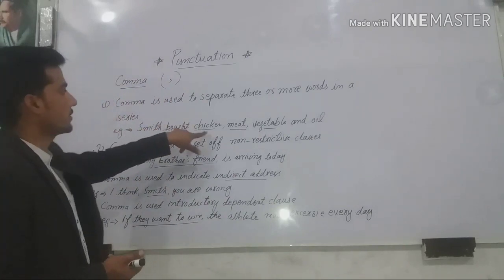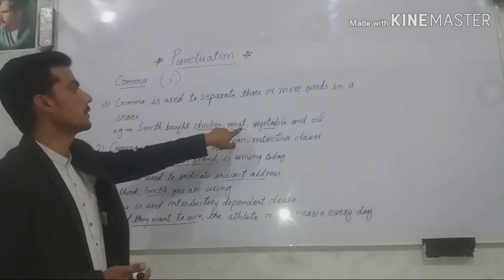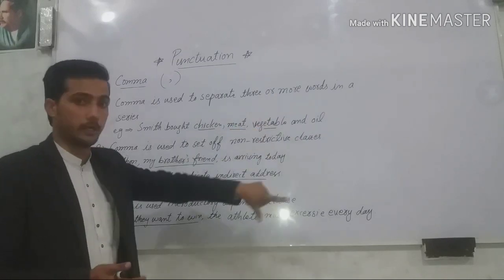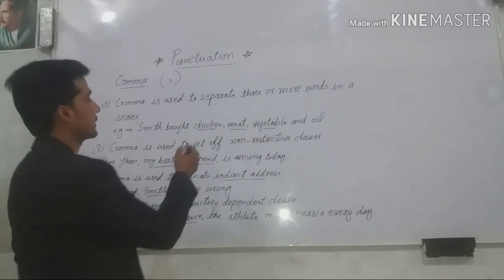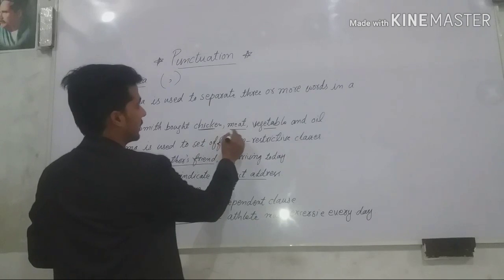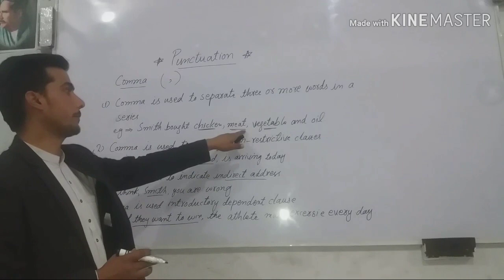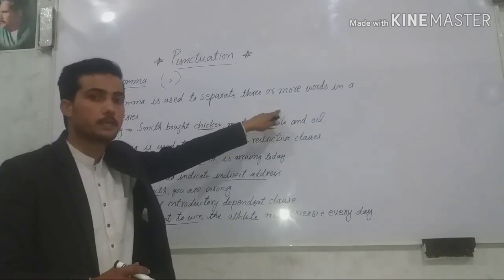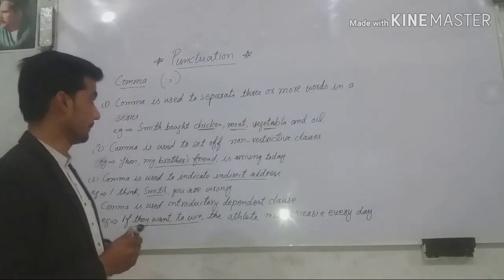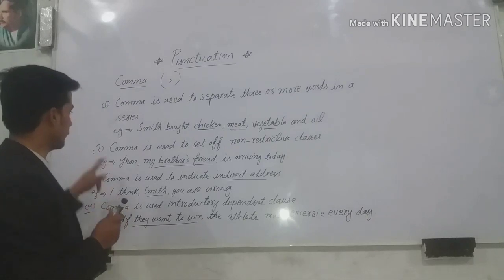Example, Smith bought chicken, comma, meat, comma, vegetable and oil. So now you just look at the things, these are items, they are separated by comma. Exactly, so we came to know that it separates a series of things in a sentence. Okay, the next one we have.